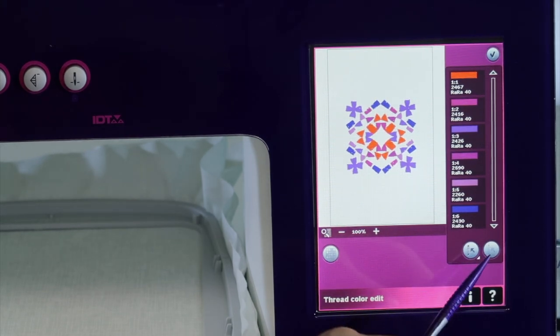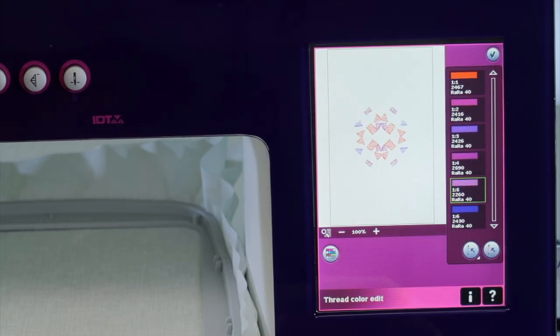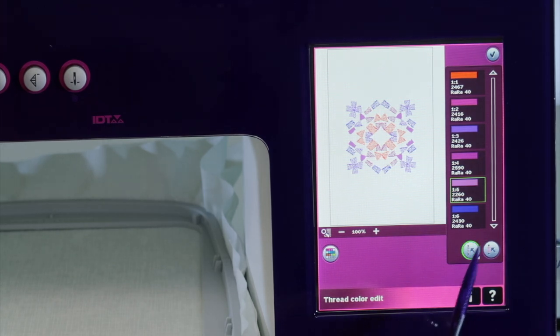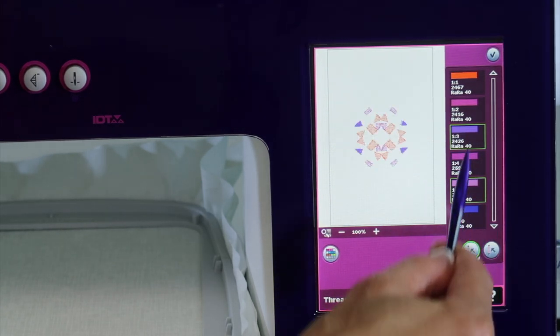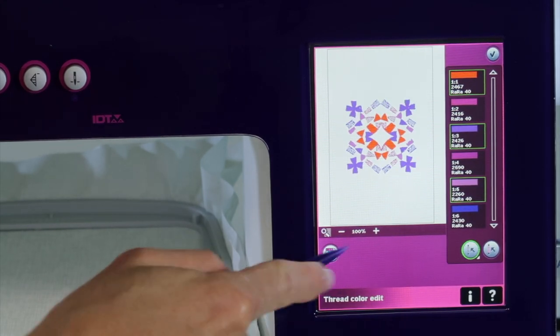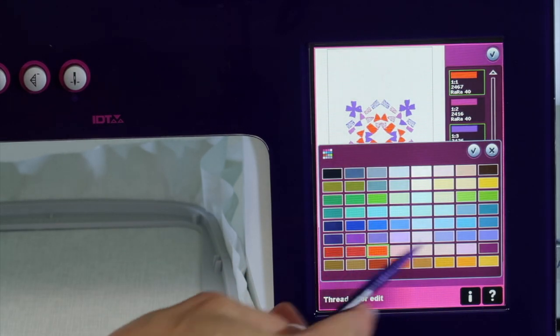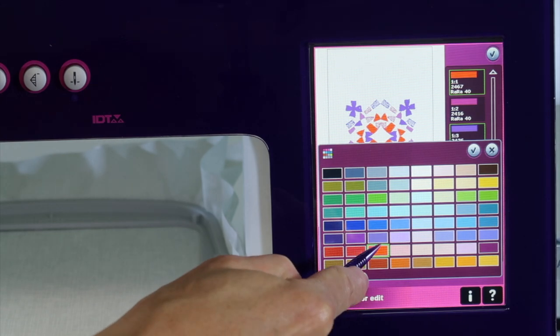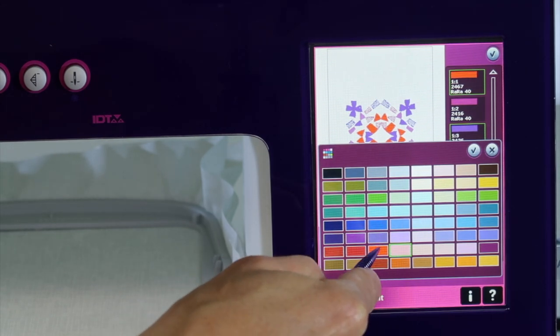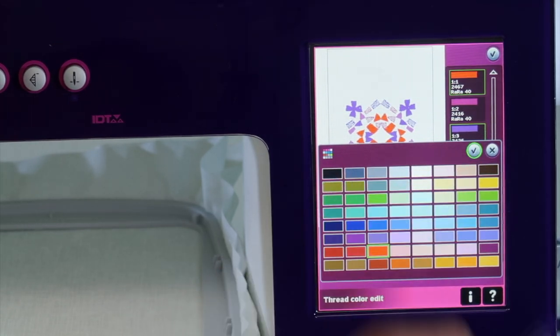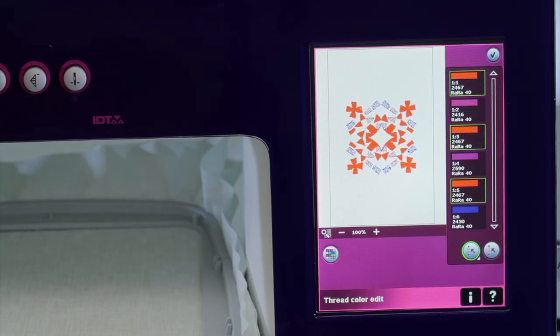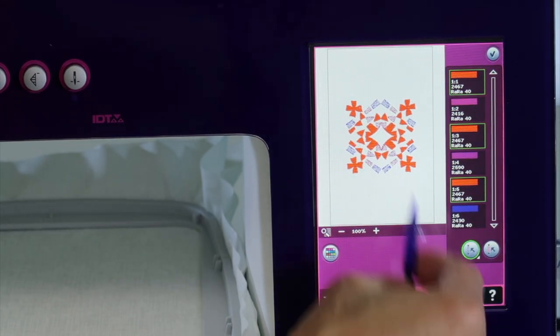I also have some options down here. I can go in and select one color, but I can also go in and multi-select. I can come in and select these three colors and then change those all to, say, orange or another color. We'll do orange. Then you'll see them all in orange. You can multi-select.